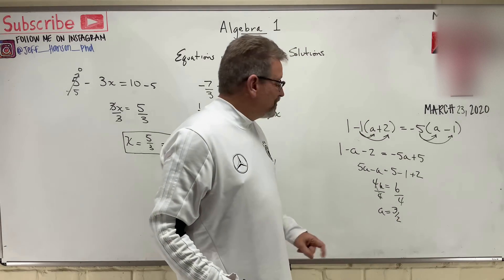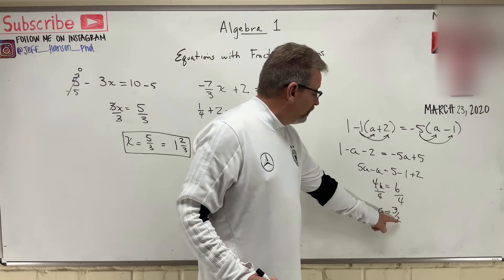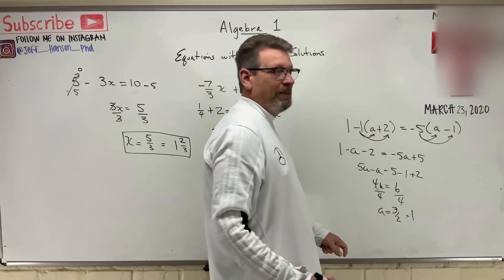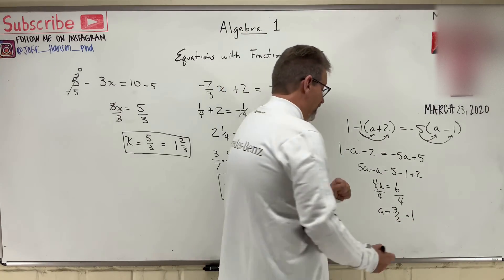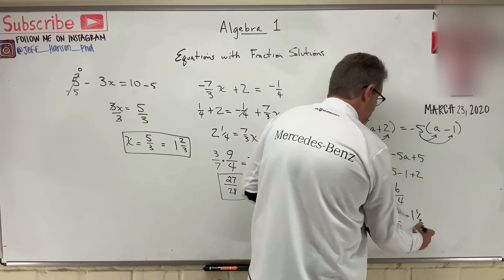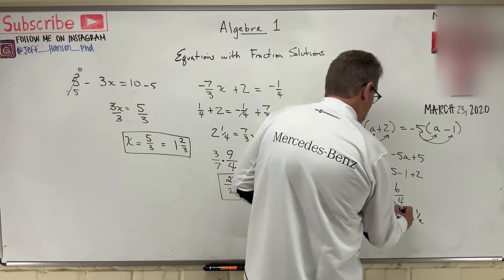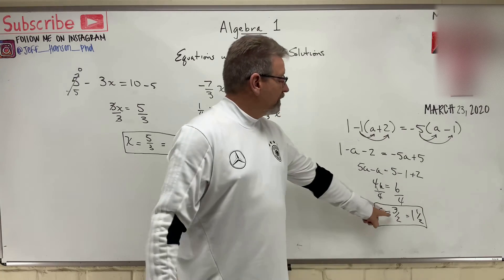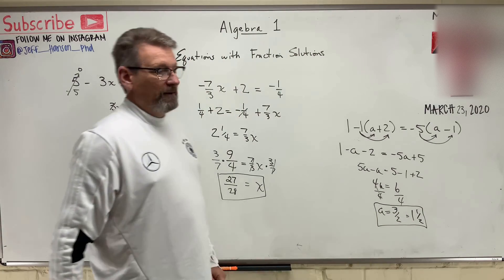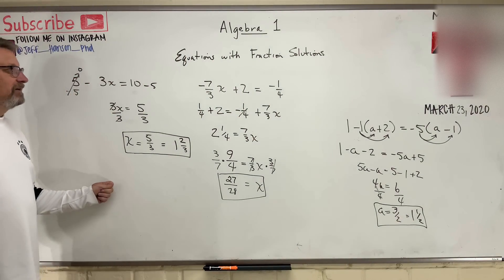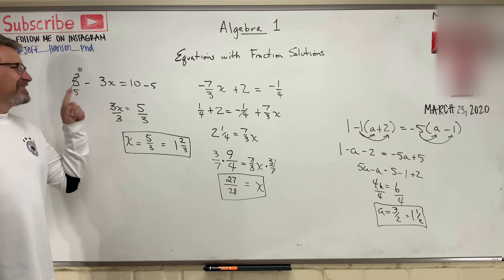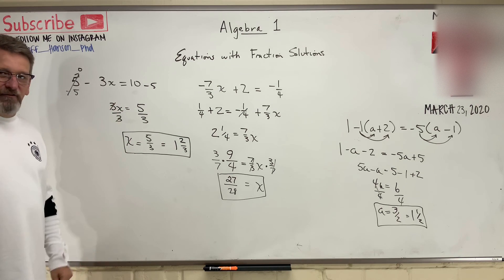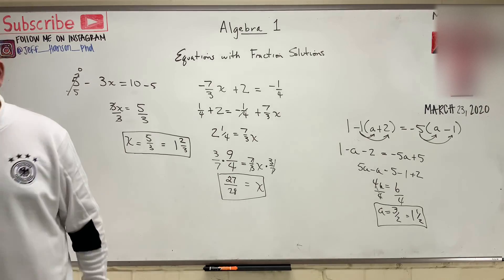Again, that's a mixed fraction. How many times does two go into three? One time, and what's the remainder? One, right? So, one and a half. Either one of those answers — either the fraction or the mixed fraction — would be an acceptable answer. Equations with fraction solutions. No worries, man. This is good stuff. All right, we've got one more to go. Here we go.